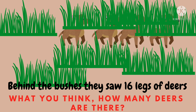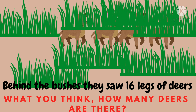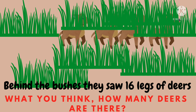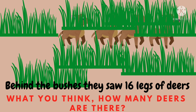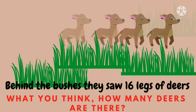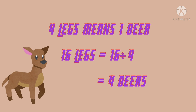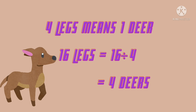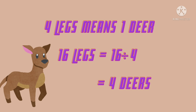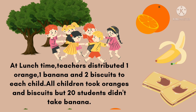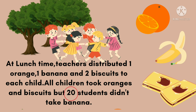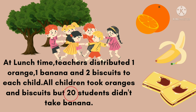Suddenly, behind the bushes they saw 16 legs of deer. What do you think? How many deers are there? Think! Yes, four deers. Four legs means one deer, so for 16 legs divide by four and we get four deers.